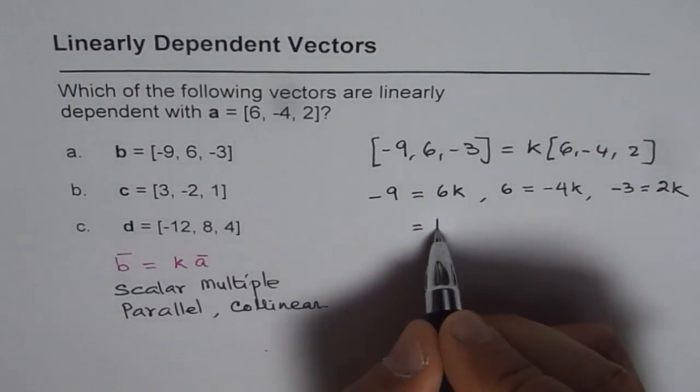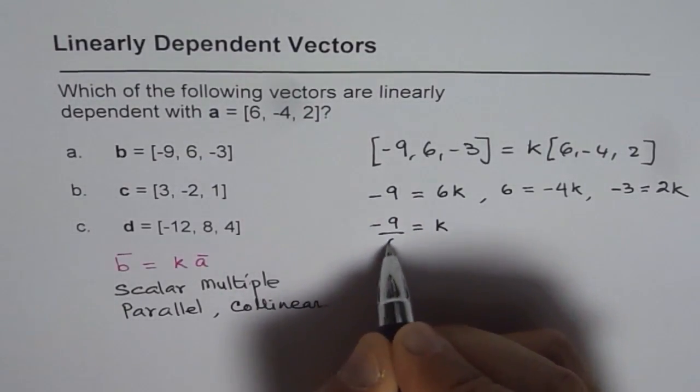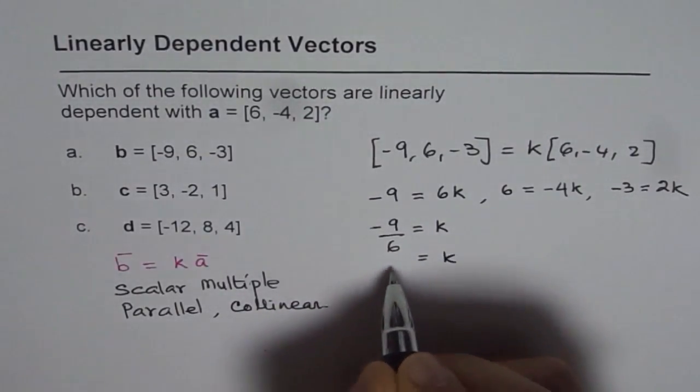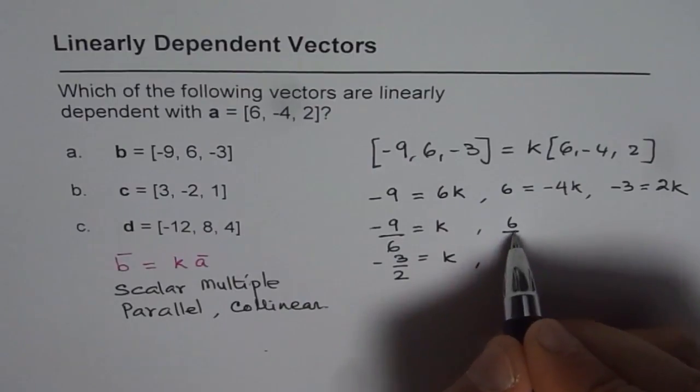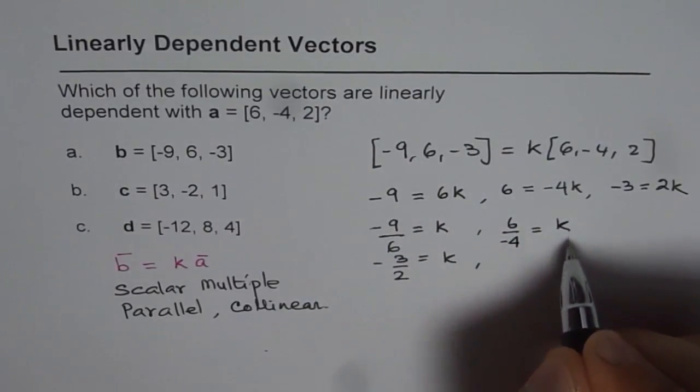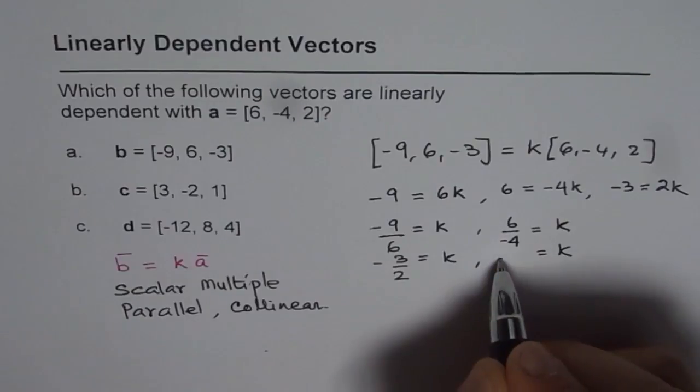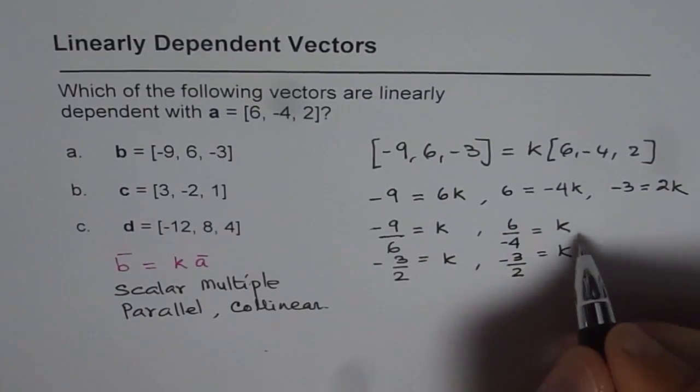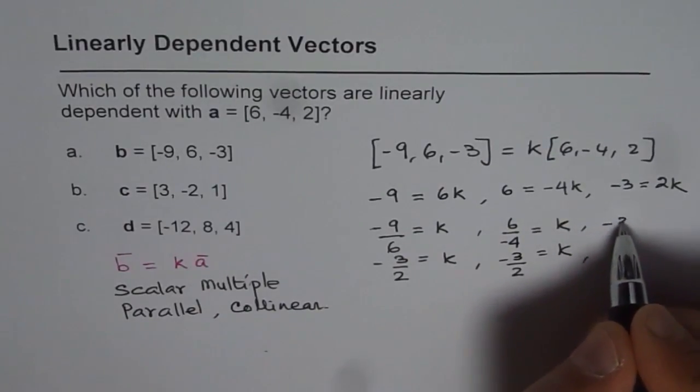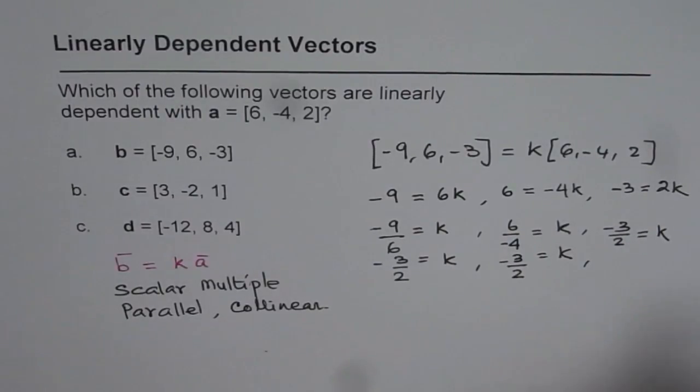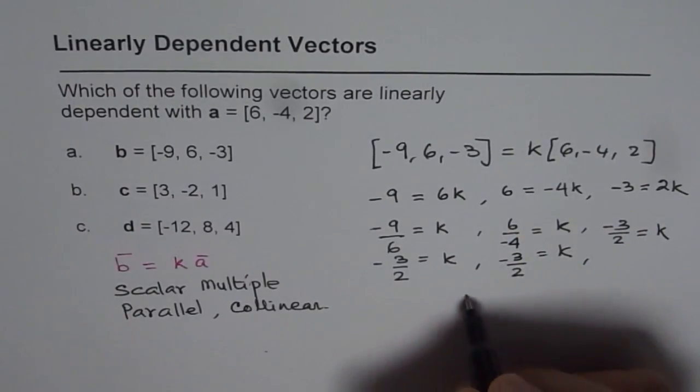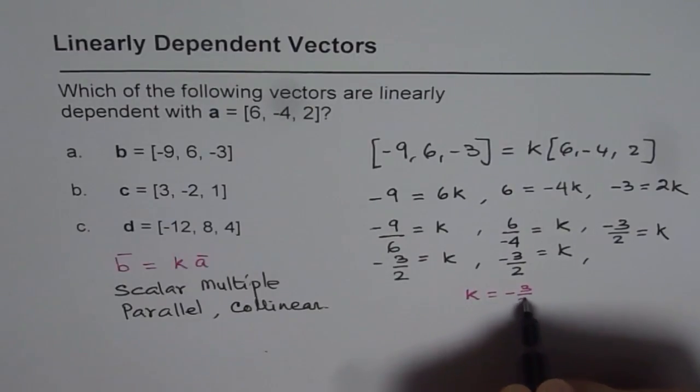So in this one, we get K equals -9 over 6. We say K equals minus, dividing by 3, we get 3 over 2. Now in the second equation, we get 6 over -4 equals K, or K equals minus, dividing by 2 this time, 3 over 2. Perfect. Now in the third case, we get -3 over 2 equals K. So what do we get for K? In all the three conditions, we get K equals -3 over 2, right?